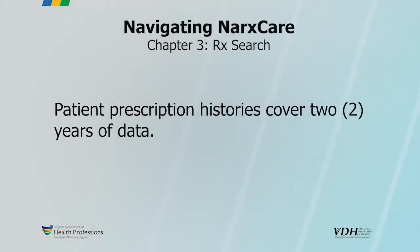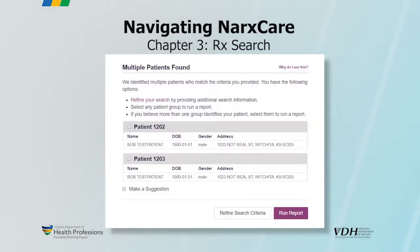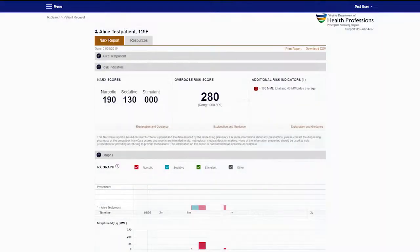Once you have entered the patient data and selected the states, click Search to generate the report. In order to generate the NarcsCare report, the system looks at exactly two years of prescribing. Once you submit the search, a results screen will be returned to you where you verify and select the appropriate matching patient profiles. Once selected, click on Run Report. The patient's NarcsCare report will generate and you will be able to view it immediately.